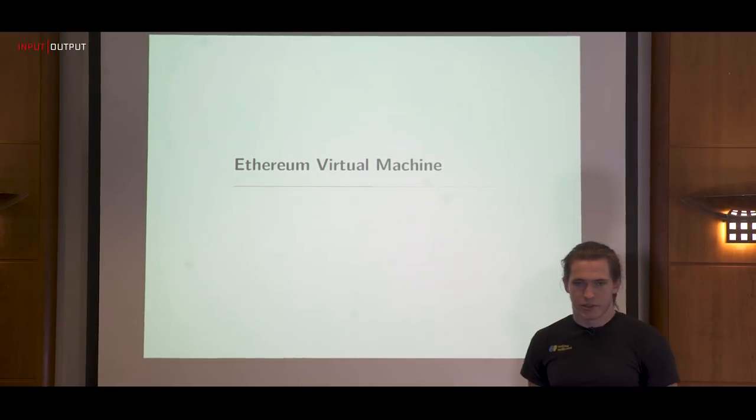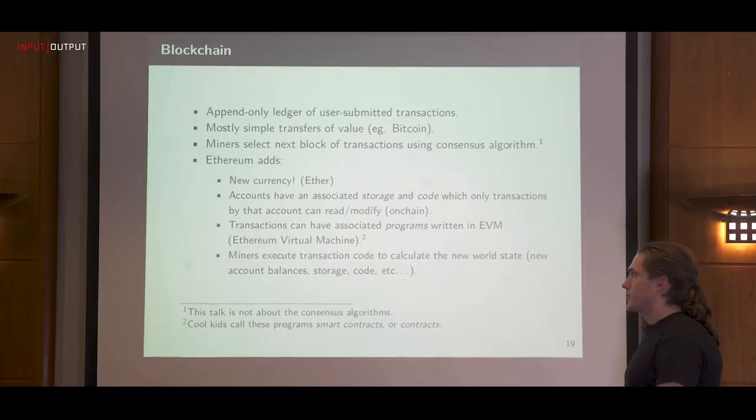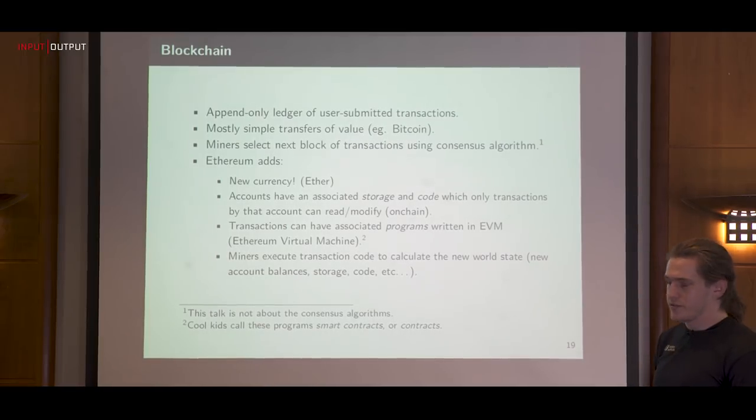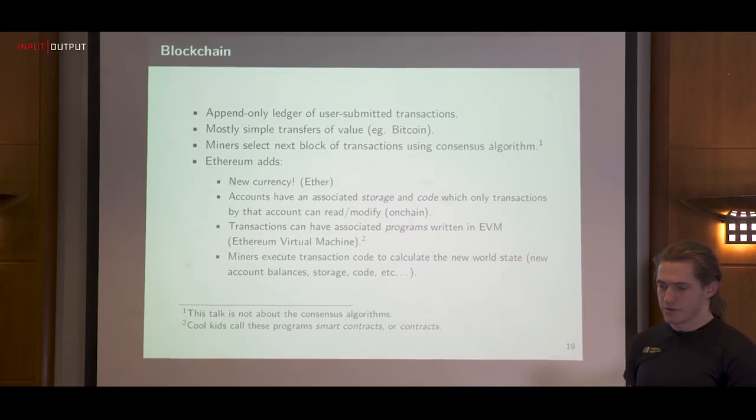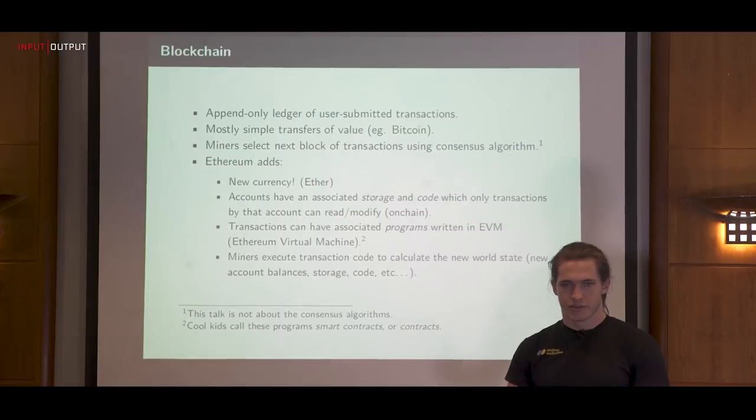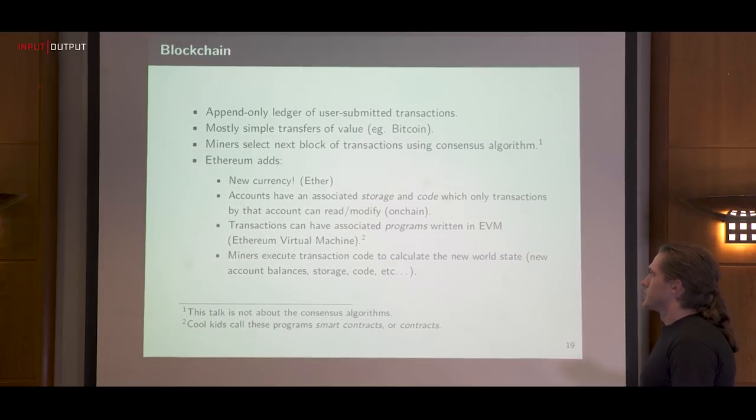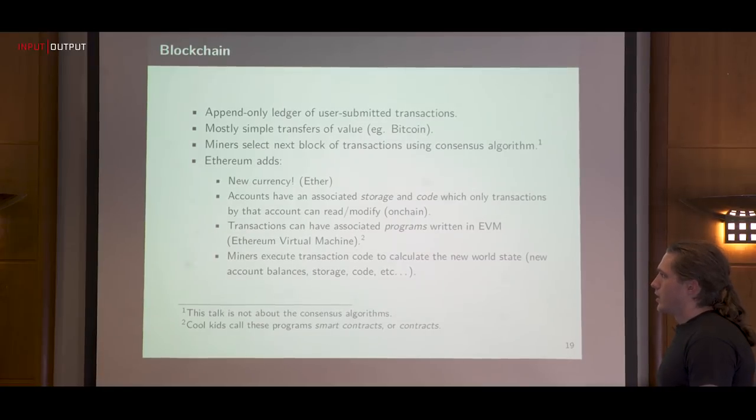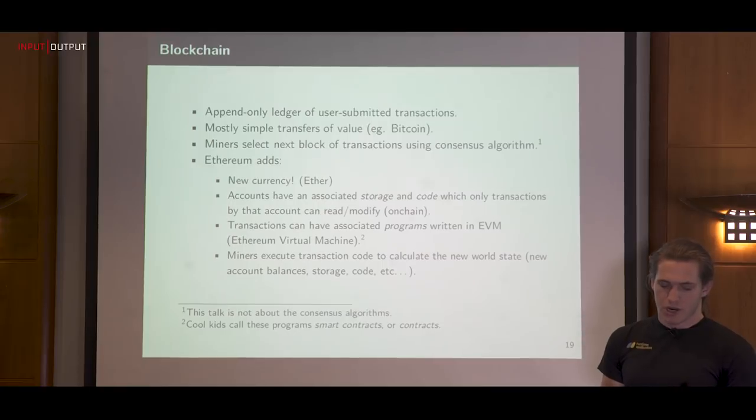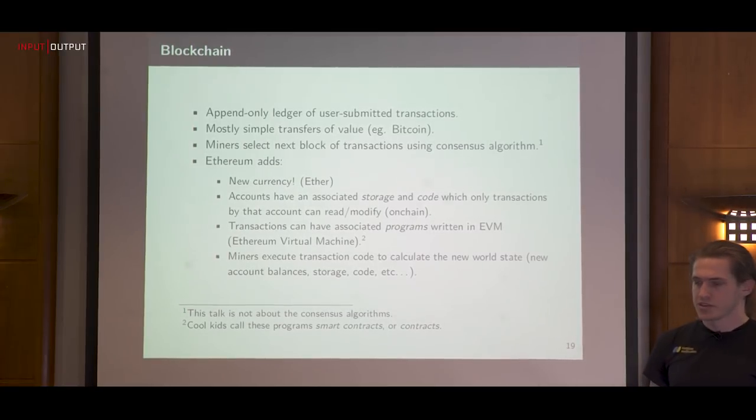Now I'm going to switch topics completely and talk about the Ethereum virtual machine. A blockchain is an append-only ledger of transactions submitted by users. The transactions are usually just transferring some sort of value. So I might say I want to pay party X some money, and party X might want to pay party Y, and both those transactions get recorded in a sequence. Miners select which is the next block of transactions to include on the blockchain, and that's how we achieve consensus.